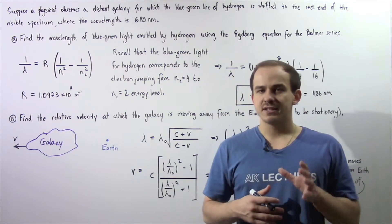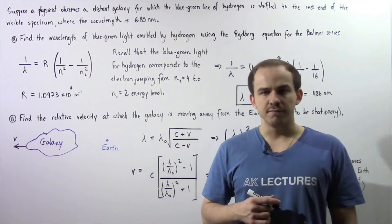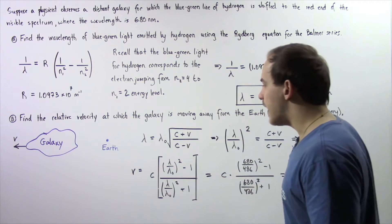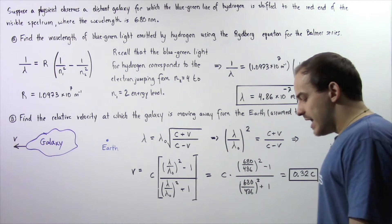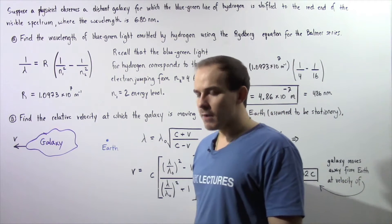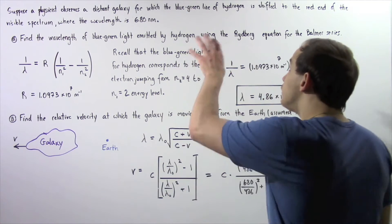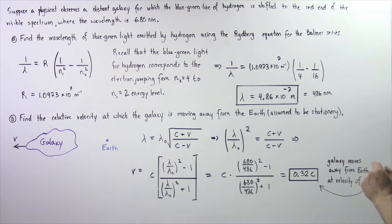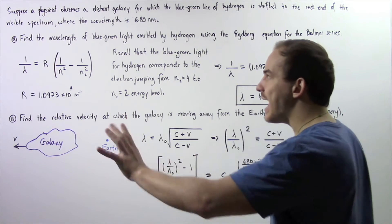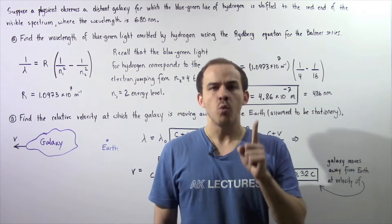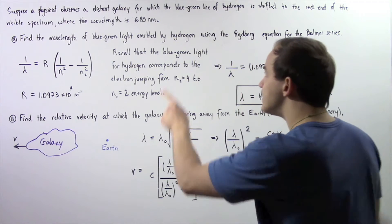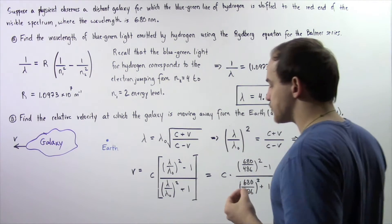Let's continue our discussion on the Doppler effect of light and look at the following example. Suppose a physicist observes a distant galaxy in which the blue-green line of hydrogen is shifted to the red end of the visible spectrum where the wavelength is 680 nanometers.